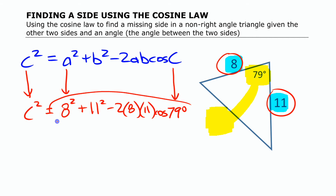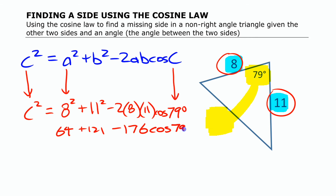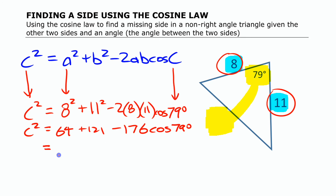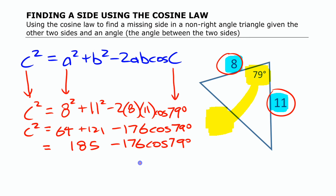To work that out we just need to evaluate this using a calculator. We can do part of it without a calculator: 8 squared is 64, 11 squared is 121, and we can multiply out the rest to get 176 cosine of 79. We could even add 64 and 121 together to get 185 minus 176 cos 79. Now we have to think carefully — there's a minus there, and this is a multiplication. So we have to think order of operations: this multiplication has to happen first. Don't make the mistake of subtracting those numbers first. I would at this point put all of that into your calculator as is.